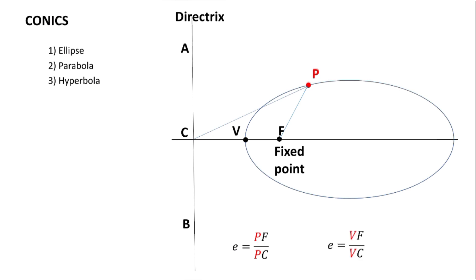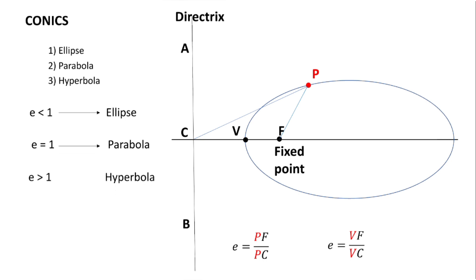The vertex point V is also a point that lies on the curve, so when I replace P by V, the eccentricity ratio becomes VF upon VC. This eccentricity ratio tells us which type of curve it is — whether ellipse, parabola, or hyperbola. When E is less than 1, the curve is an ellipse; when E equals 1, it is a parabola; and when E is greater than 1, it is a hyperbola.